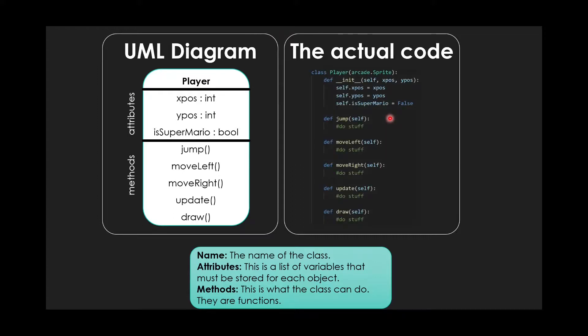In Python, using the Arcade library, it might look like this. A player is a certain type of sprite in Arcade. When you create a player, when you initialize a player, you'll need to tell it the X position and the Y position, and save these for later.